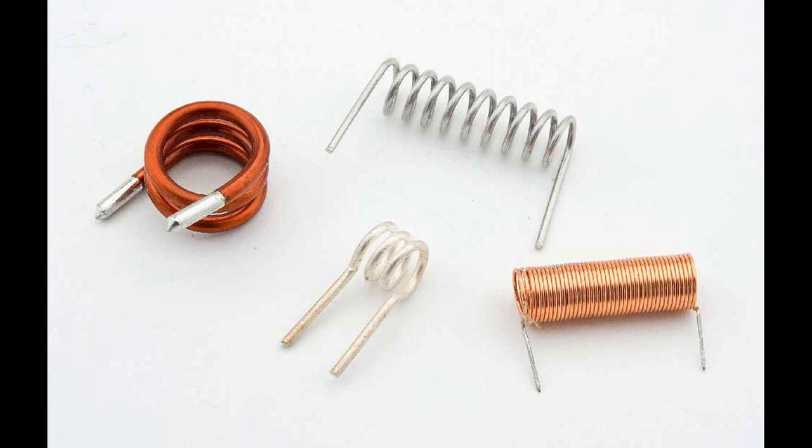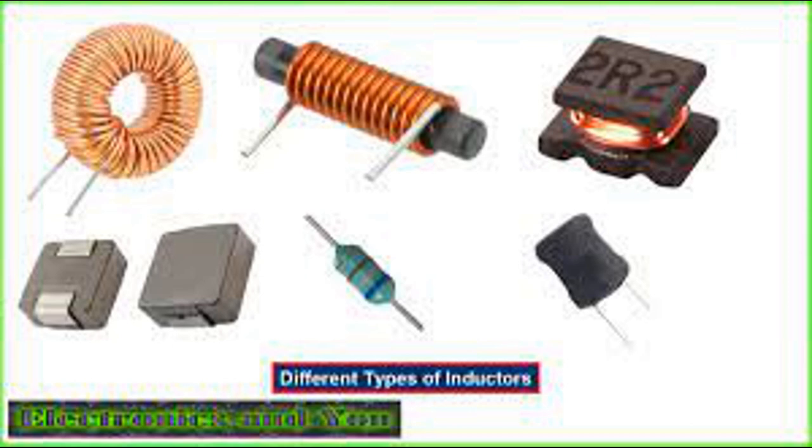Energy storage: coils, being inductive components, store energy in the magnetic field when a current flows through them. This stored energy can be released back into the circuit when the current changes or is interrupted. Coils are often used in power supply circuits, filters, and energy storage devices like chokes.